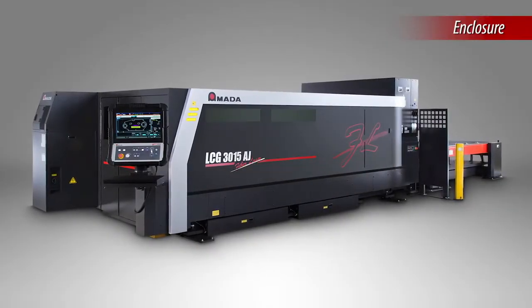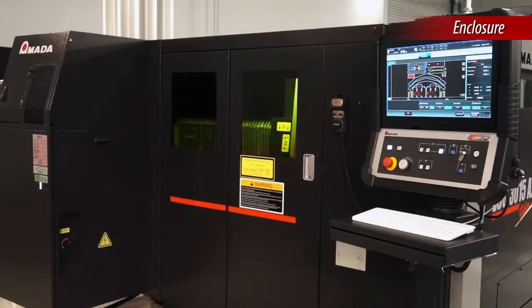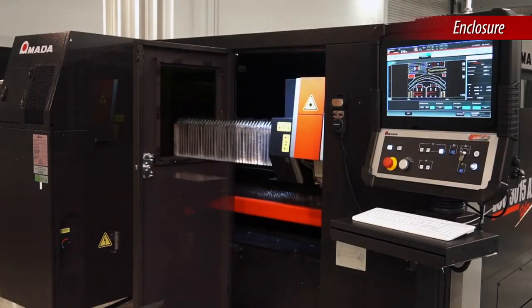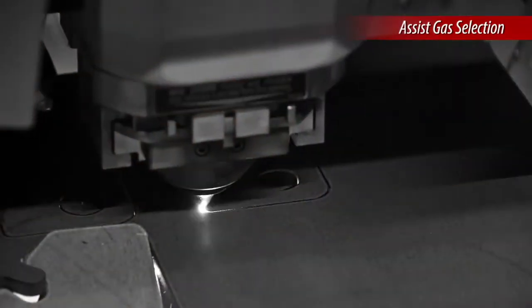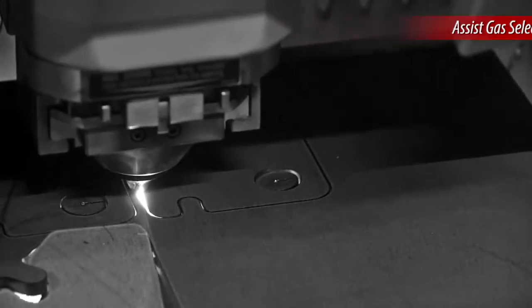The LCG-AJ features a fully interlocked enclosure that surrounds the entire cutting area with access for part removal. Automatic assist gas selection chooses the proper assist gas without operator intervention.